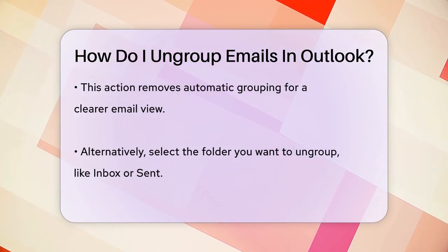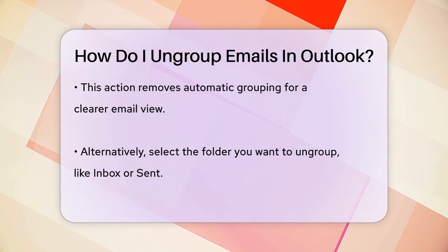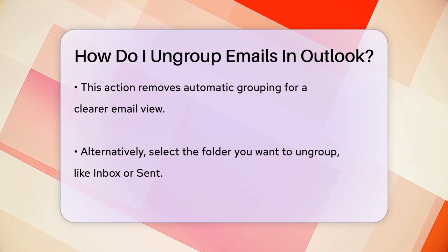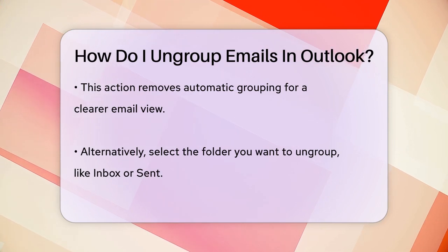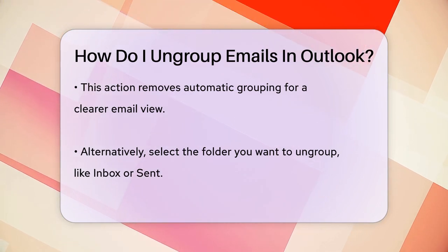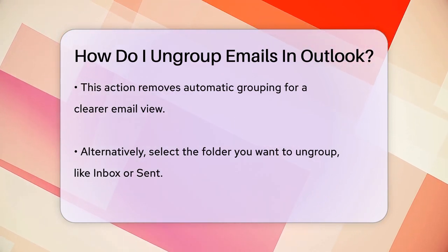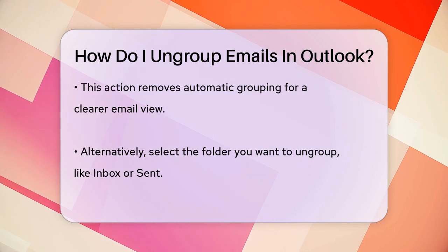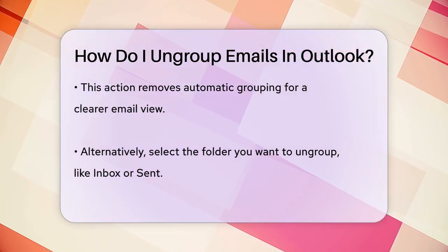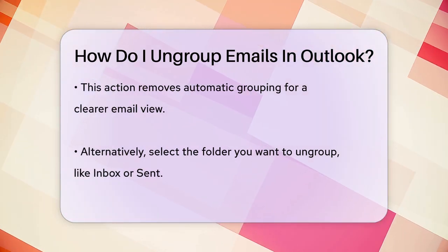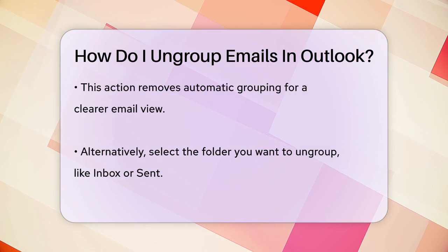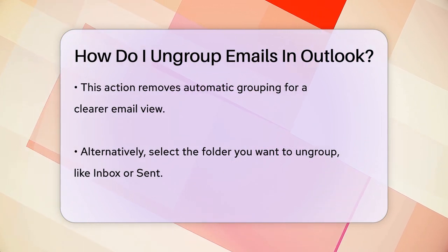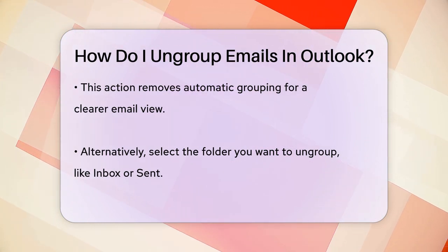Another way to do this is by adjusting the view settings directly from your inbox. Click on the folder you want to ungroup, such as your inbox or sent folder. Then look for the sorting settings just above the list of messages. Typically, this says By Date — click on it to drop down a menu.